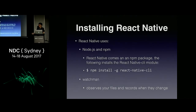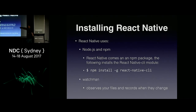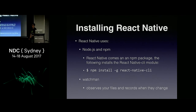React Native is available as a Node.js package. All you need to do is install Node.js on your machine, npm, install the CLI, and install a tool known as Watchman, which will continually monitor changes in your files and then update your application when you make changes.